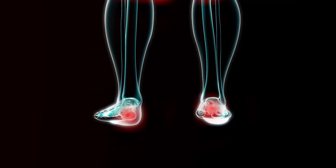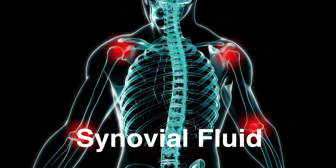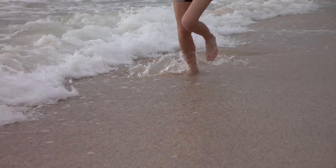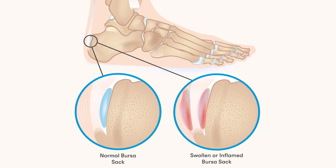In order for the bones in the joints to glide smoothly while they move, the body has small lubricated sacs called bursae located around moving joints throughout the body. The sacs contain a small amount of lubricating fluid called synovial fluid. The normal space inside of a bursa contains just enough synovial fluid to allow the surfaces to glide across each other with very little amount of friction.